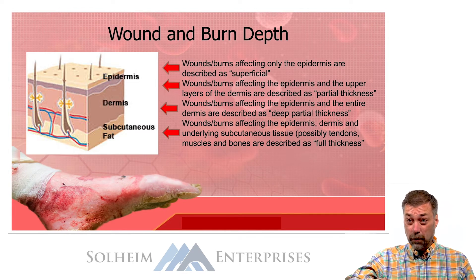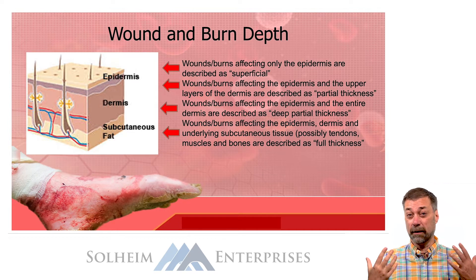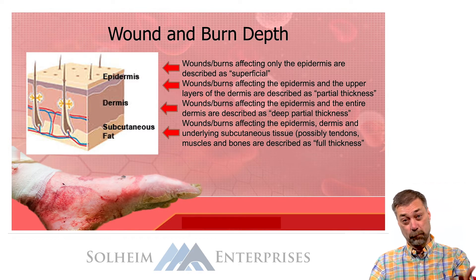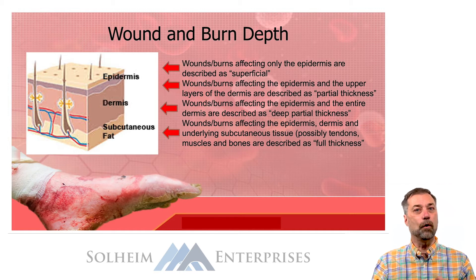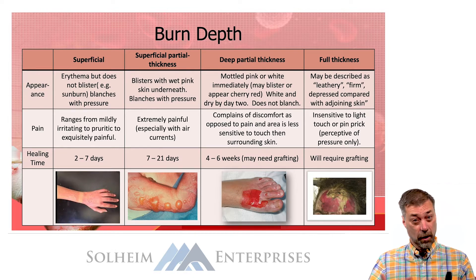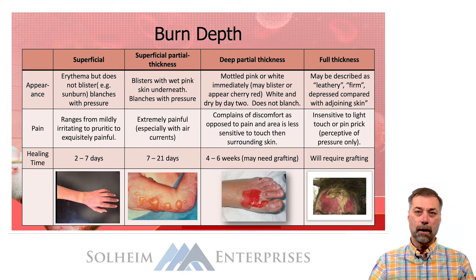If you burn below the dermis into the underlying subcutaneous tissue — where you might find fat and even muscle — those are considered full thickness burns. Or if a wound extends that deep, it's a full thickness wound. Now on your screen you can see the chart, which also matches what's in your handout, that goes over the various burn depths and what they appear like and how they heal.